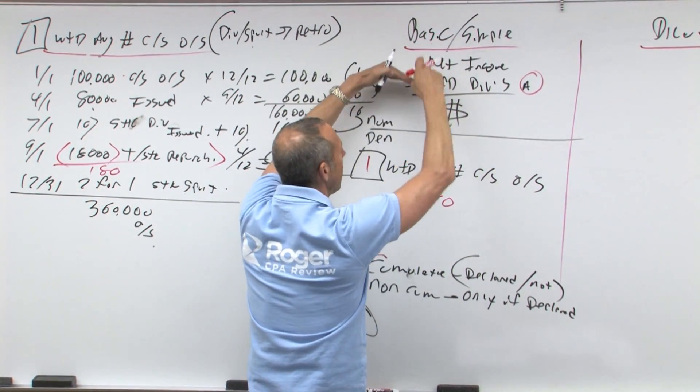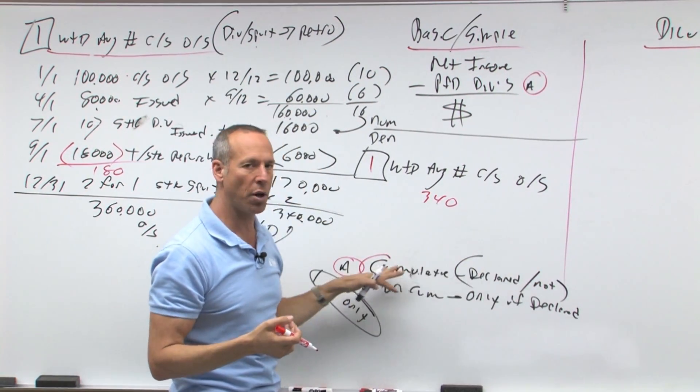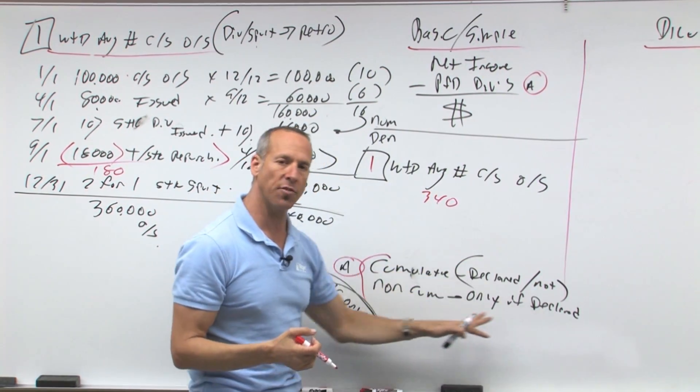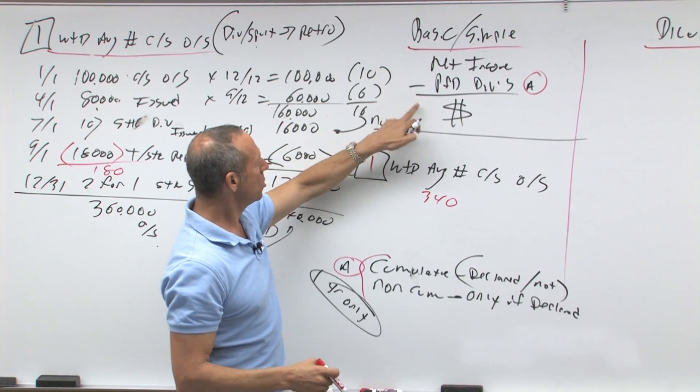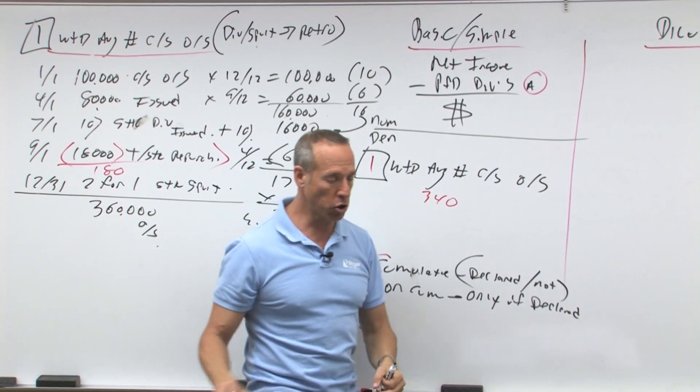So you take net income minus preferred - what is the rule on preferred? If it's cumulative, take it out whether declared or not. If it's non-cumulative, only if declared. Then you take that divided by the weighted average number of common stock outstanding.